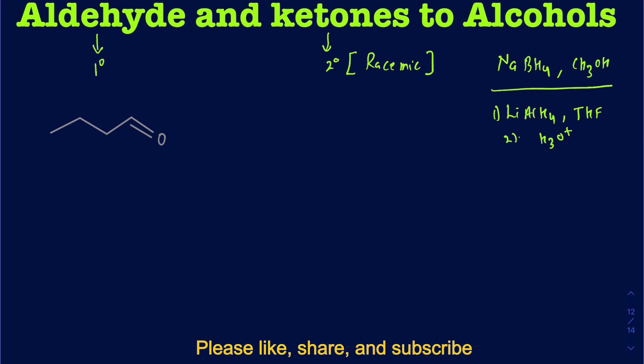I'll use NaBH4 in one example and LiAlH4 in the second — they're not really different in terms of mechanism. NaBH4 has a minus charge and a Na+ associated with it. The bond between boron and hydrogen: hydrogen is going to take away the electron pair shared between boron and hydrogen. The carbon of the carbonyl is less electronegative than the oxygen, so there's a partial positive charge on carbon and partial negative on oxygen, and the hydride attacks the carbonyl carbon.